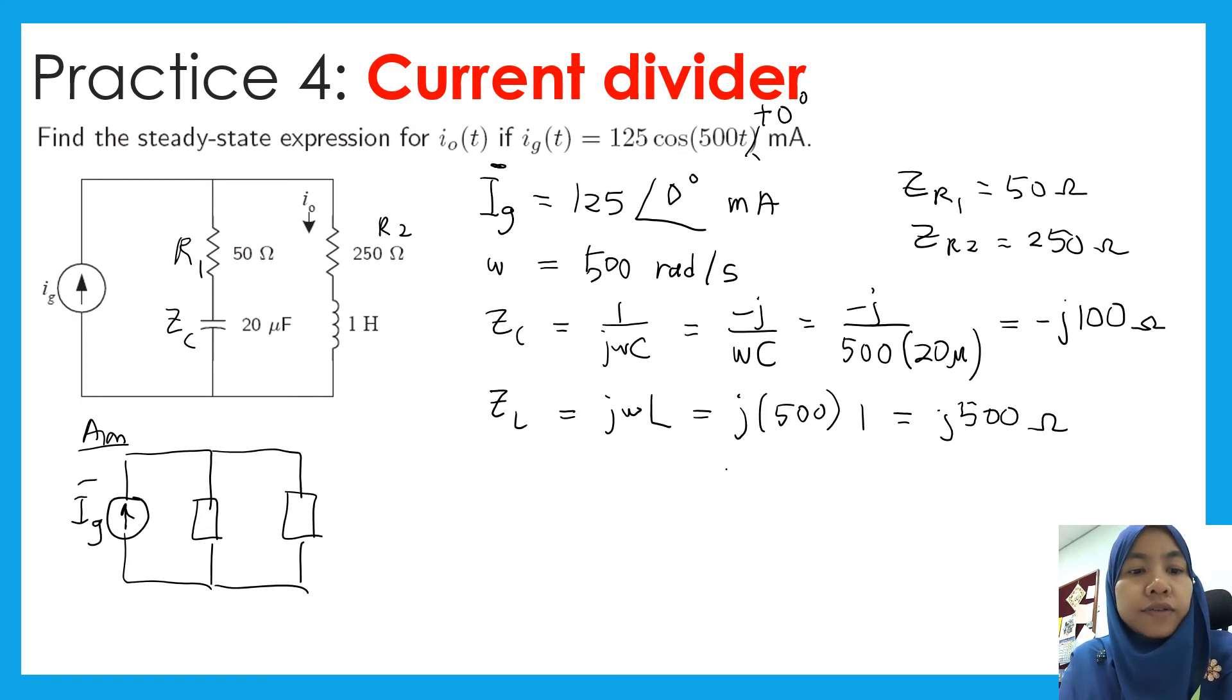Using current divider rules, you need to find impedance of 1 and impedance of 2. So what is the current we want to find? I node is equal to, bear in mind, I'm using the capital letter with bar up there. Because we want to find in phasor form. So we need the current source into the impedance of 1 divided by impedance of 1 plus impedance of 2.